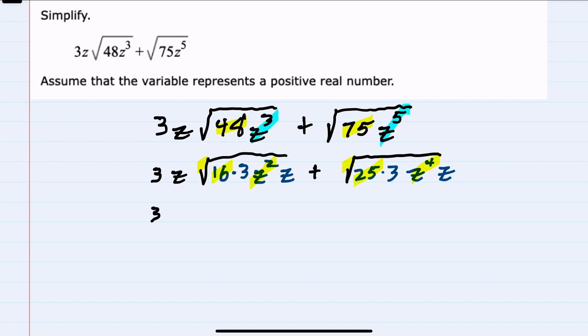Moving on with this simplification, for the first radical, this 16 can come outside the radical as a 4. The z² can come outside the radical as a z, where I'm taking the power and dividing by 2. I'm left under the radical with the 3 and the z.